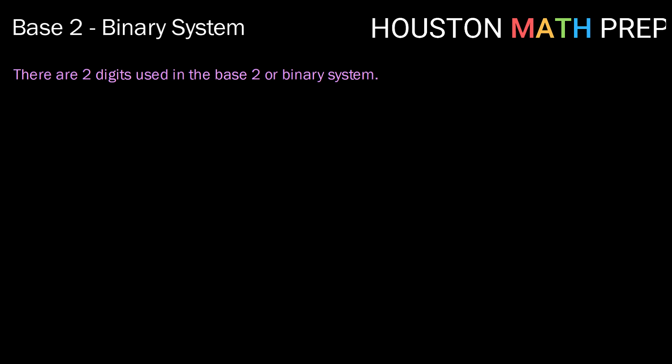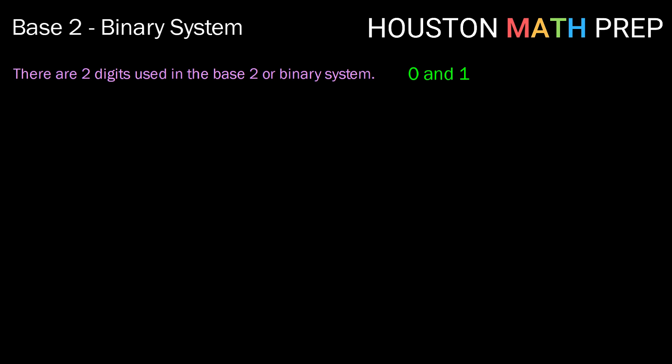Hey guys, welcome back. Houston Math Prep here. In this video we're going to take a look at the base 2 or binary system. There are two digits used in the base 2 system, 0 and 1. The binary system is most frequently used in computer programming.